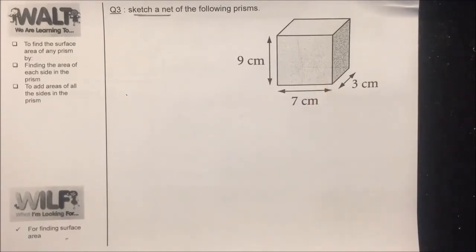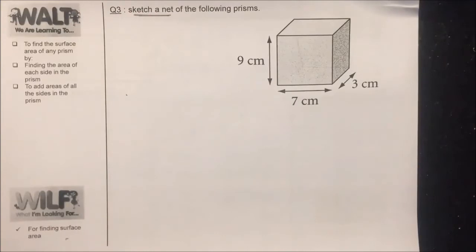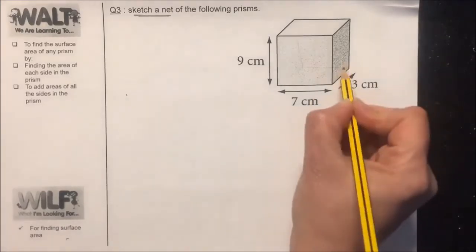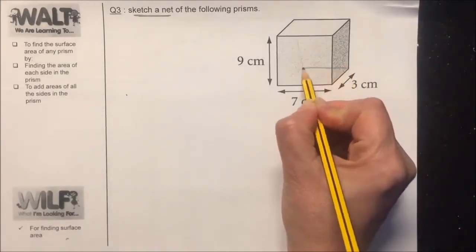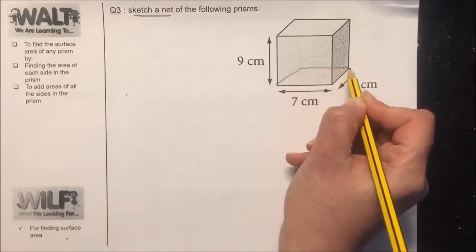The third skill that you need to learn today when you deal with prisms or 3D objects is drawing or sketching a net. To start the drawing, always start with the face that is on the floor, the face that is sitting on the floor, which is this one here.